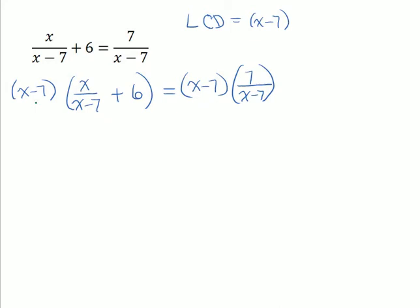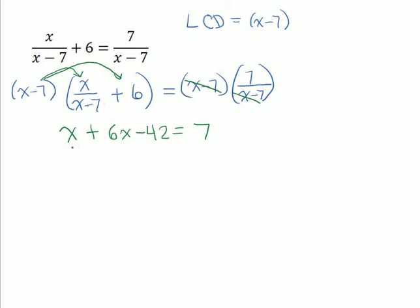Now let's do the multiplication. When we multiply x minus seven by x over x minus seven, the x minus sevens cancel out, leaving us with x. Then when we multiply x minus seven by six, we use the distributive property: x times six is six x, and negative seven times six is negative 42. On the other side of the equation, the x minus sevens divide out, leaving us with seven.